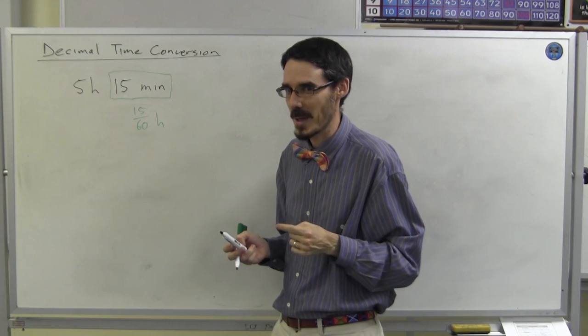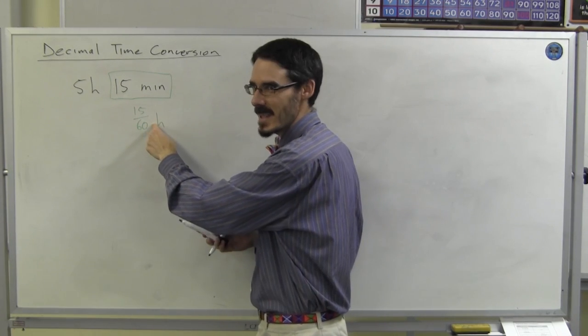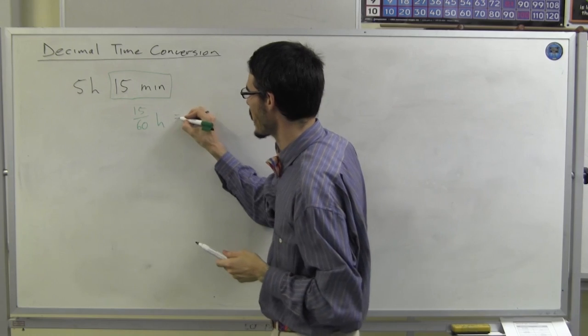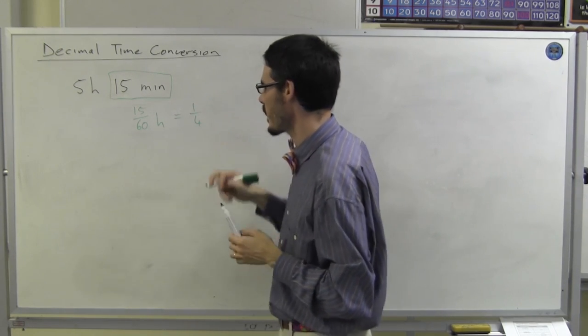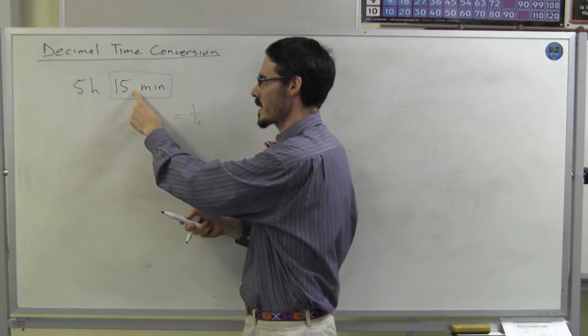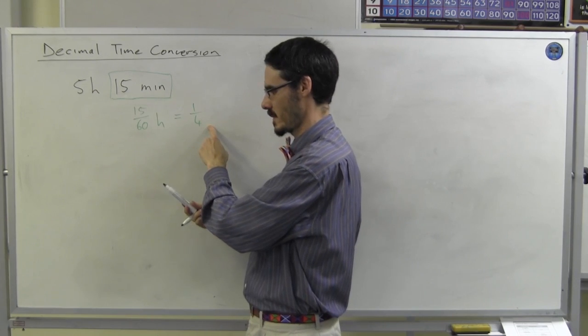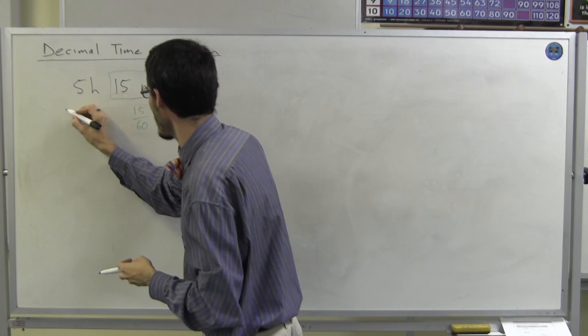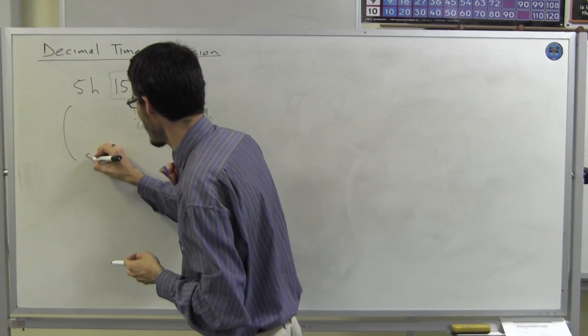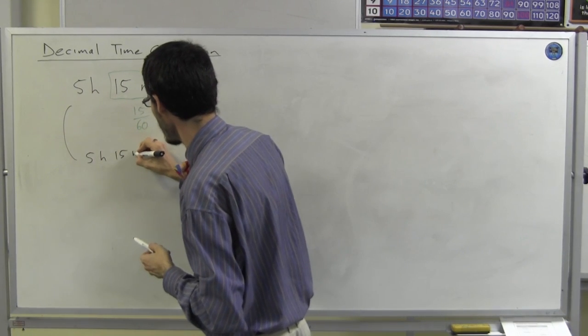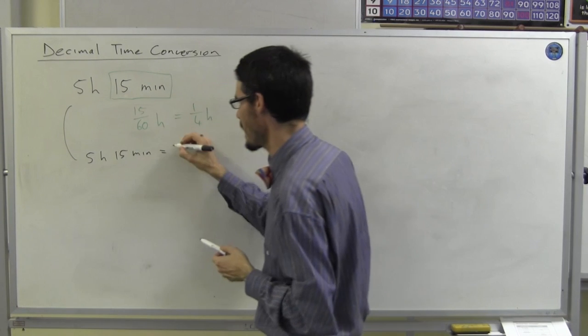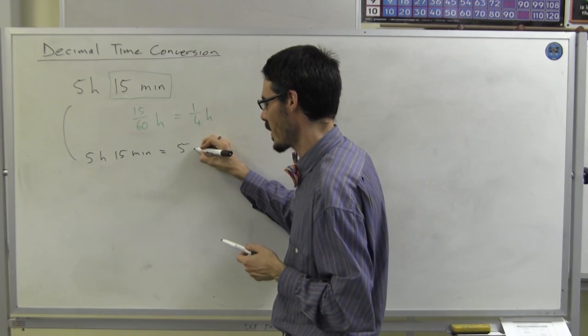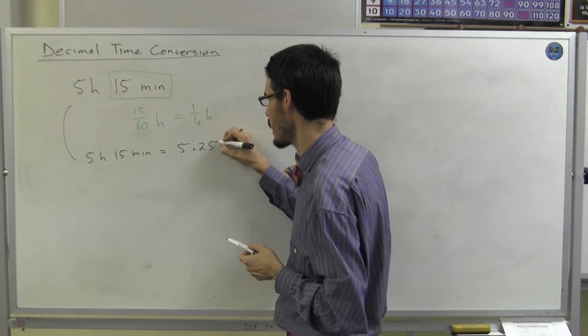But actually there's a quicker way for this one. 15 out of 60 is the same as 1 out of 4. This is a quarter of an hour. And if it's a quarter of an hour, that means 5 hours and 15 minutes is going to be the same as, what's a quarter in a decimal? It's 0.25.